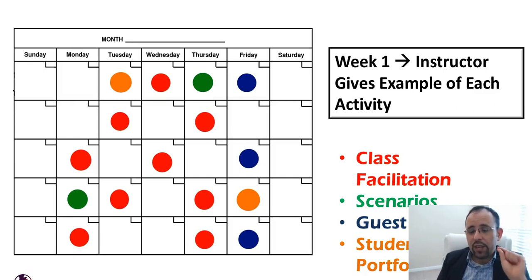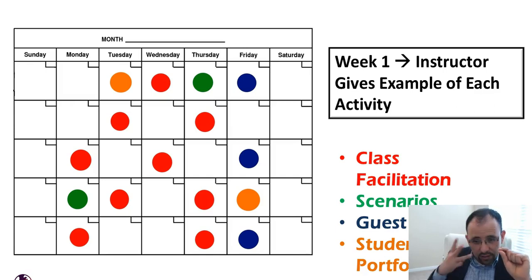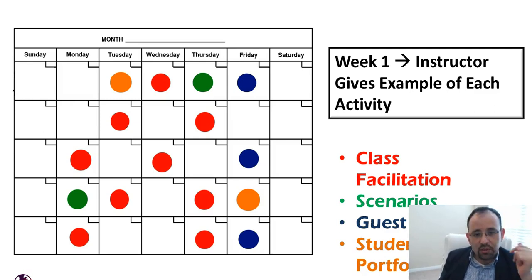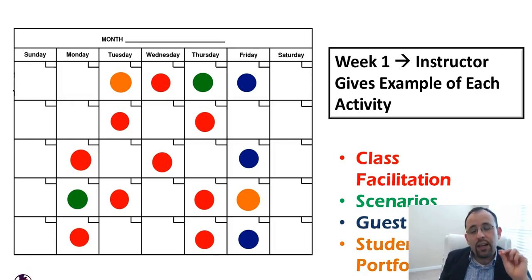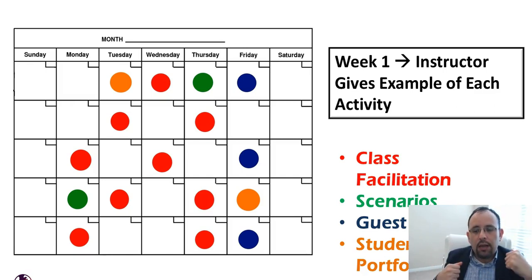Looking at week one, it is the teacher's responsibility to set the tone. The teacher has to show an example of a student portfolio, facilitate a class with the three components — the presentation, the interactive activity, and the printed activity. On Thursday, the teacher explains what a scenario is and shows examples. On Friday, the teacher brings an international or intercultural speaker and holds a panel, showing students how every single activity is expected to be done in that very first week.